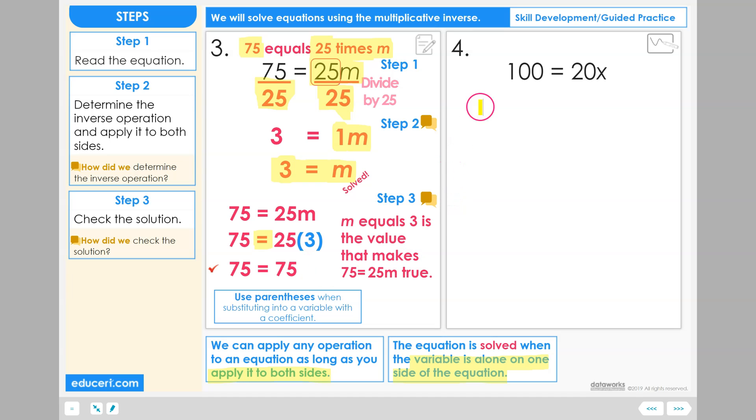You are now ready to solve the equation in number 4 using the multiplicative inverse to get the variable x alone on one side.